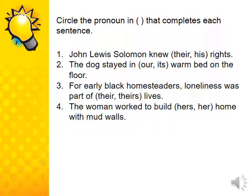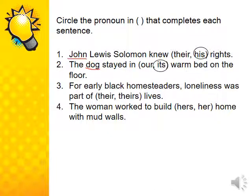Now circle the pronoun in parentheses that completes each sentence. Number one: 'John knows his rights' — the antecedent is 'John,' which is singular masculine, so we choose 'his.' Number two: 'The dog stayed in its warm bed on the floor' — 'dog' is the antecedent, singular, so we choose 'its.' Number four: 'For early black homesteaders, loneliness was part of their life' — 'homesteaders' is the antecedent and is plural, so 'their' or 'theirs.'